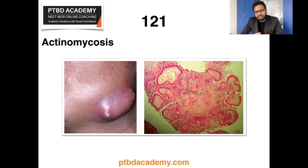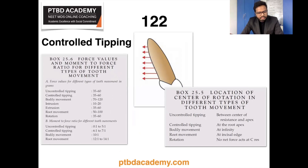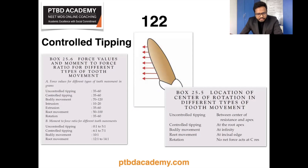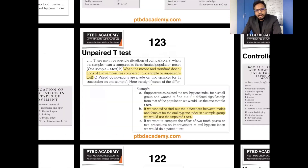Moving on, controlled tipping is a keyword we received. Here is some relevant information regarding force values and location of center of rotation. In controlled tipping, the crown moves in one direction with minimal or no movement of the root in the opposite direction. This is useful in traction of excessively proclined incisors when roots are normally positioned. The center of rotation is at the root apex, force required is 35–60 grams, force-to-movement ratio is 70:1, and there is minimal stress of the PDL at the root apex, with stress pattern more in cervical areas.